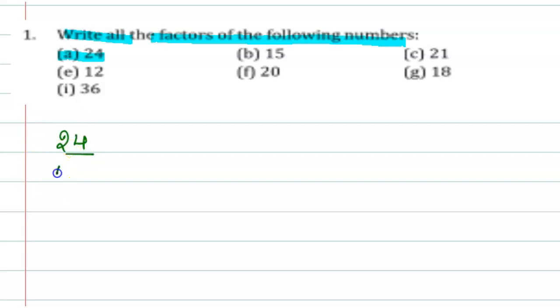Now first we will write here 1, 1 into 24 is equal to 24. Now this is 2, 2 into what number should be multiplied to give 24? So it is 12, 2 into 12 is 24.